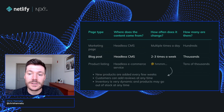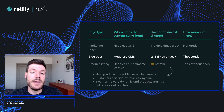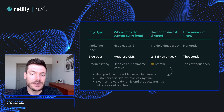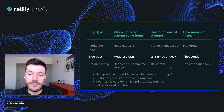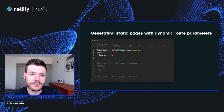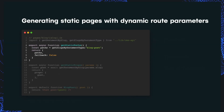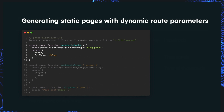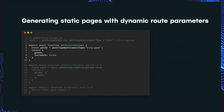If we move on to our blog posts, we'll see that we have many more of these, and we definitely wouldn't want to create individual Next.js pages for each post. This is where we can make use of dynamic route parameters. For these pages, we will still use getStaticProps to fetch data, but we'll introduce another function, getStaticPaths. getStaticPaths is used to give Next.js the list of pages that we want to generate using this particular page template.